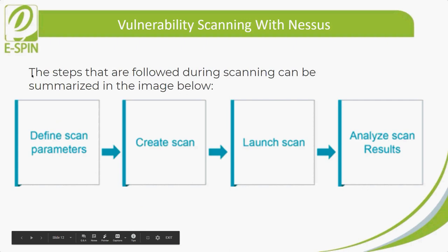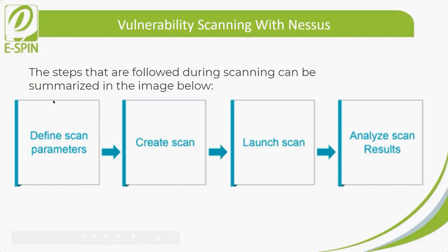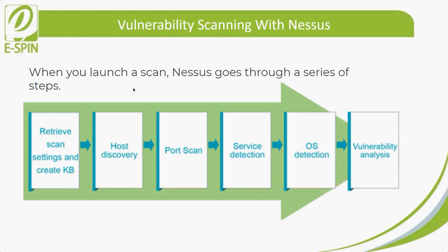The steps followed during scanning can be summarized as shown on screen. First is define scan parameters, second is create scan, third is launch the scan, and finally analyze scan results. When the scan is launched, Nessus goes through a series of steps: retrieve scan settings and create KB, then host discovery, port scan, service detection, OS detection, and finally vulnerability analysis.